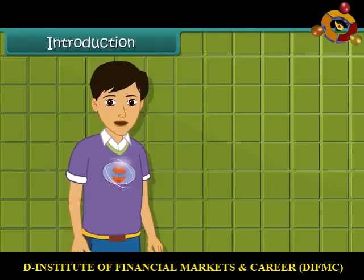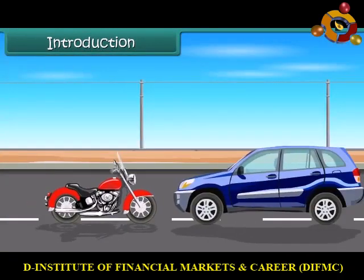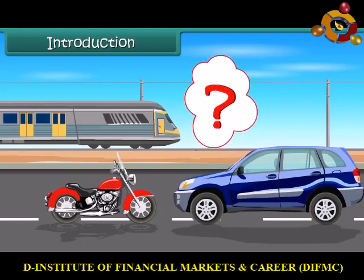Hi friends, we can see so many vehicles like bikes, cars, trains etc. all are running around us. They don't eat any food like any living being do. Then how they get their energy?